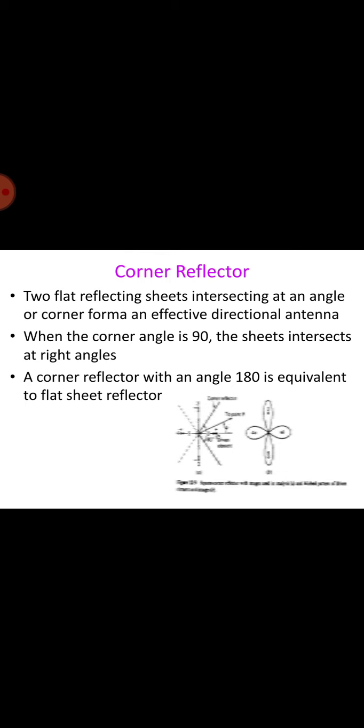When the flat sheet is folded into a square corner, the theory calls for three images, and its calculations showed correspondingly higher gain. He developed the corner reflector as an extension of his analysis of the W8JK array.